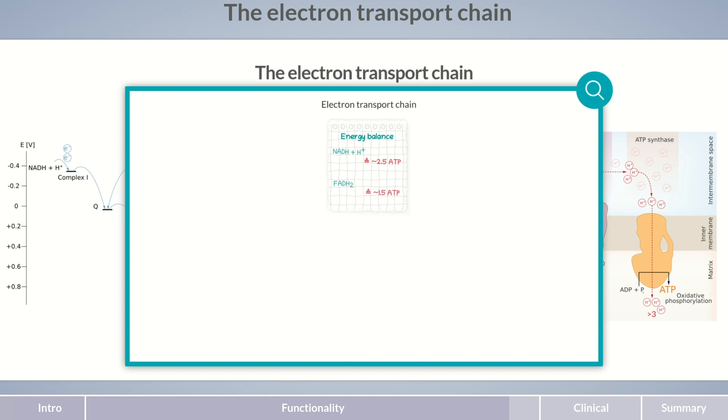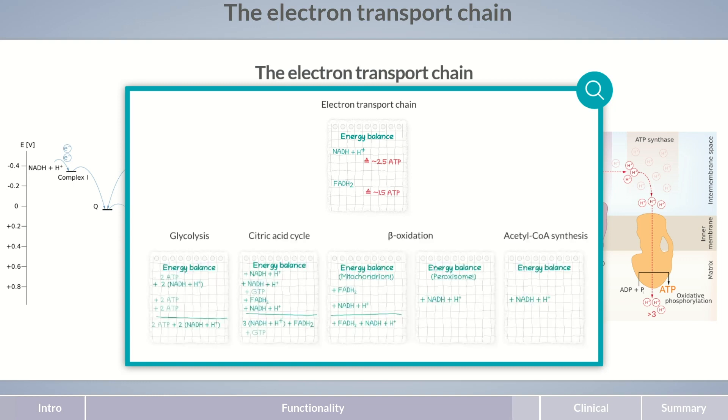Therefore, the respiratory chain increases the energy balance of the various metabolic pathways. Glycolysis provides an additional five molecules of ATP this way. The citric acid cycle, an additional 9 ATP molecules per acetyl-CoA unit. Mitochondrial beta-oxidation, an additional 4 ATP molecules per cycle unit, and peroxisomal beta-oxidation, as well as the oxidation of pyruvate to acetyl-CoA, provide an additional 2.5 molecules of ATP each. So you can see how large a role the electron transport chain plays in energy production.